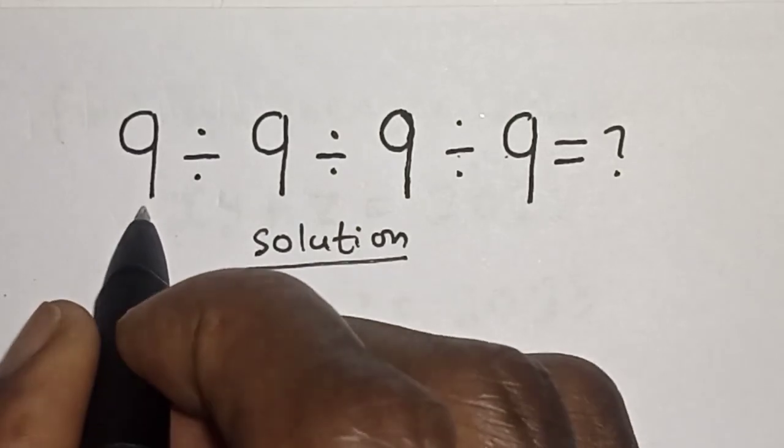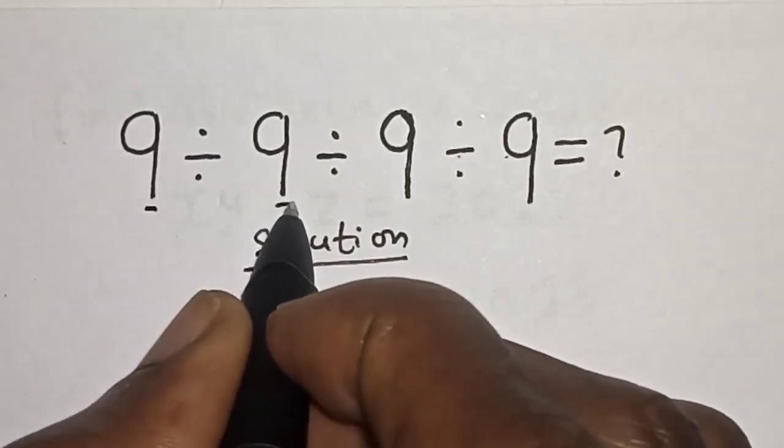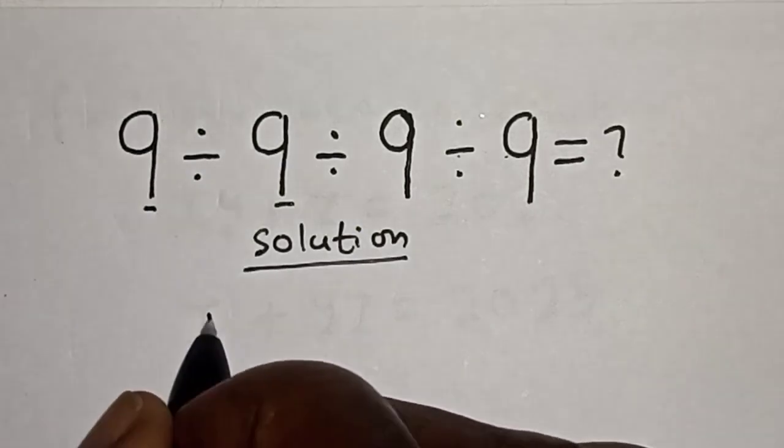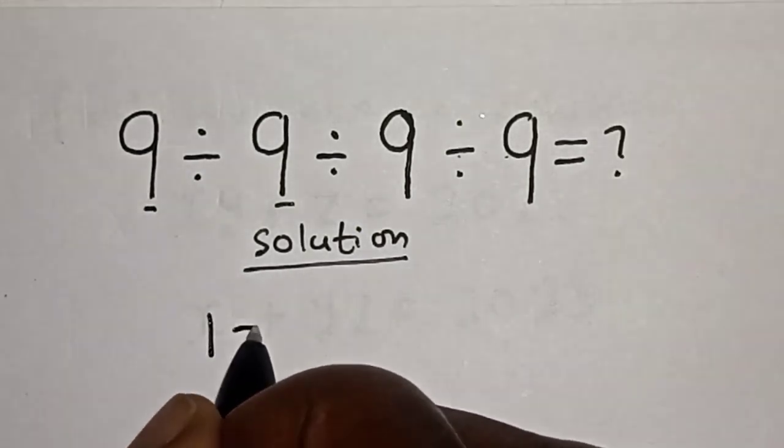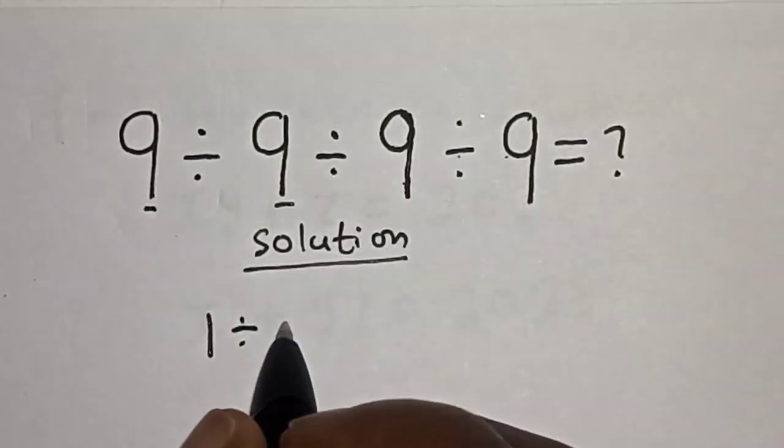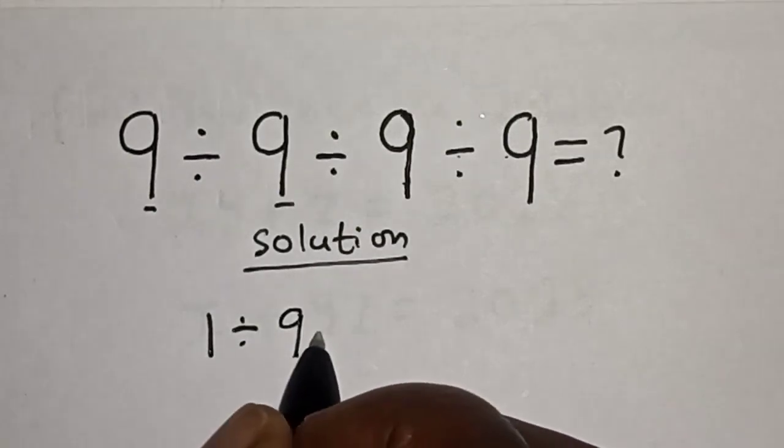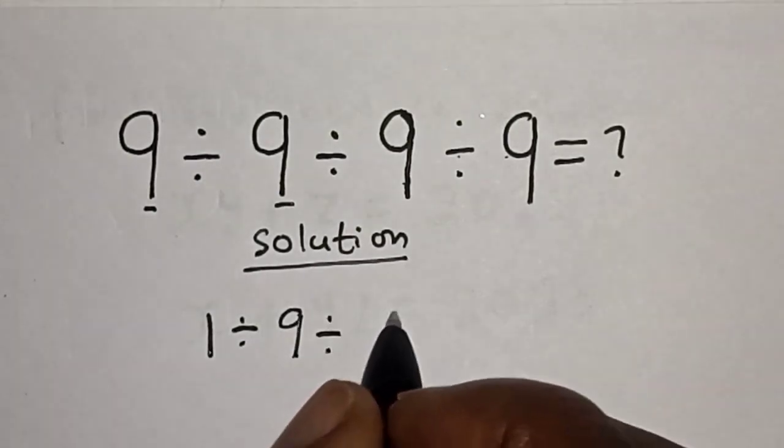Then, let's work with these first two first. 9 divided by 9, that is 1. Then, divided by, we are left with this: 9 divided by 9.